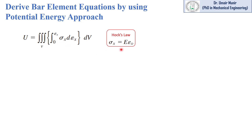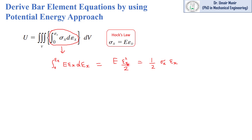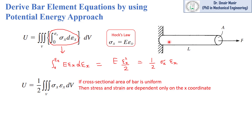According to Hooke's law, sigma x is equal to E times epsilon, so sigma x may be replaced by E epsilon. If we integrate epsilon x with respect to delta epsilon x, we get epsilon x squared divided by 2. Using Hooke's law again, we replace E epsilon x with sigma x, giving the equation in the form one-half sigma x epsilon x. We can now write the strain energy equation in this simplified form.